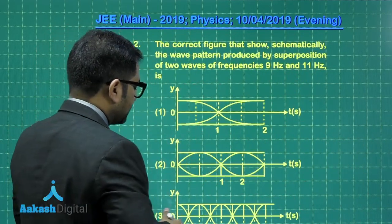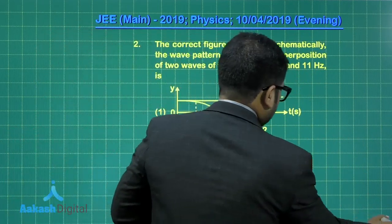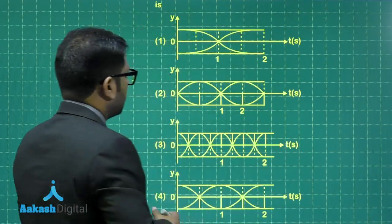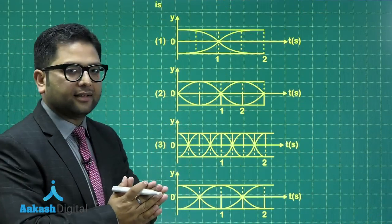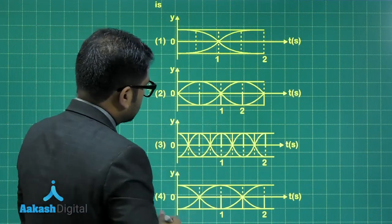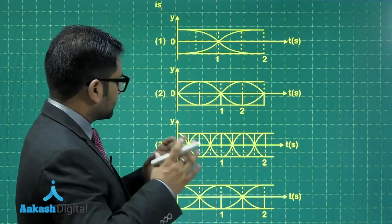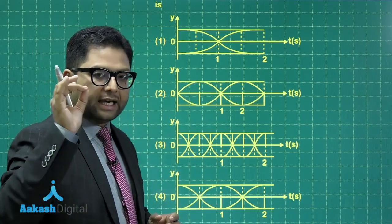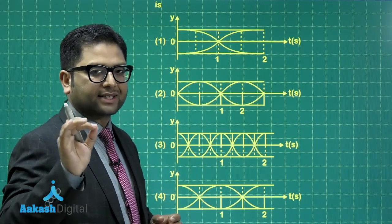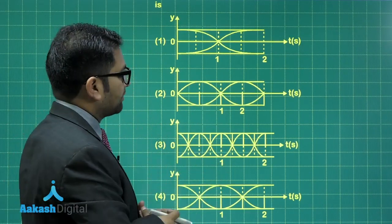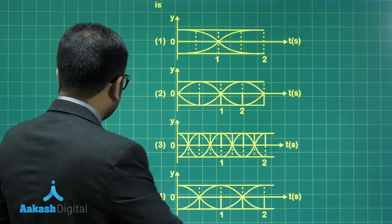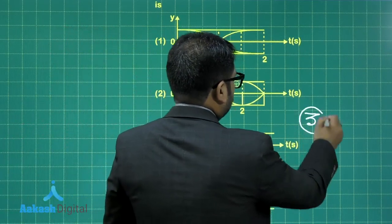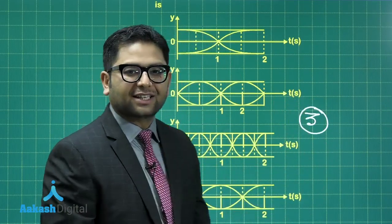So if you do that, in order to get two maxima, two maximum intensities in one second, you could see in all the given options, option number 3 leads to that particular answer. The clue: two intensity maxima in one second, and intensity is directly proportional to amplitude squared. That would be more than sufficient to lead option number 3 as the correct answer.